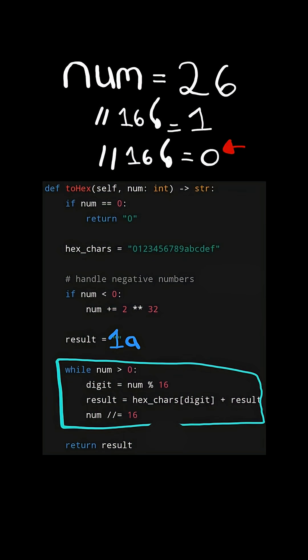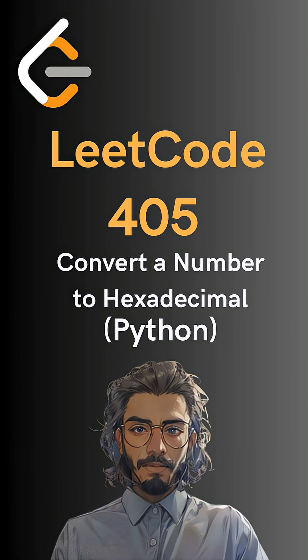When the number reaches 0, we stop the algorithm and return the resulting string. And here's the code to do so. Please like and follow for more.